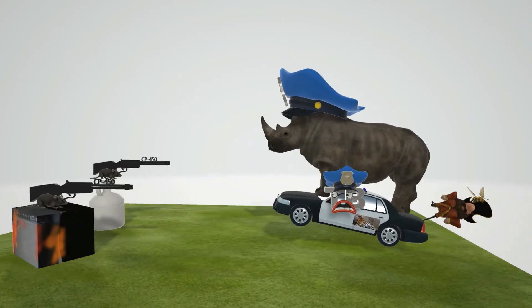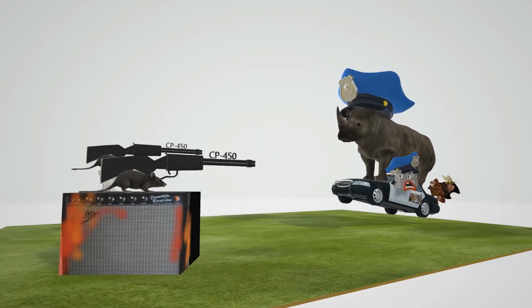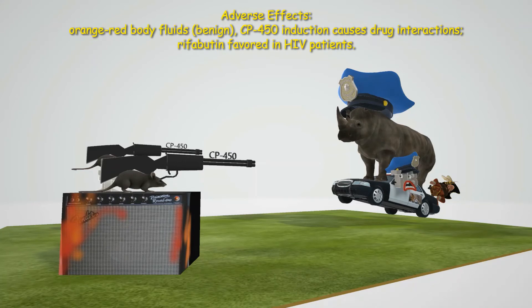Looking at the mice one more time — you may have noticed that on the ant over here, the mouse had some urine that was red and orange. This helps us remember that taking rifamycins can cause bodily fluids such as urine and tears to become orange-red in color, which may be alarming but is actually completely benign.